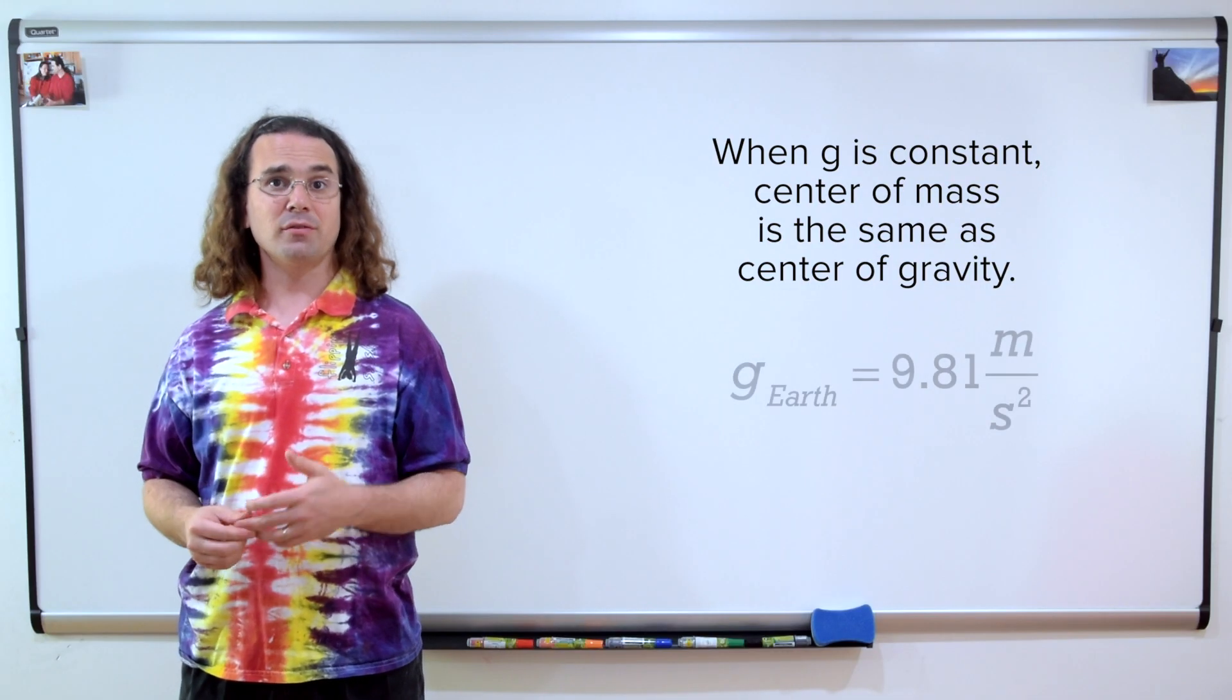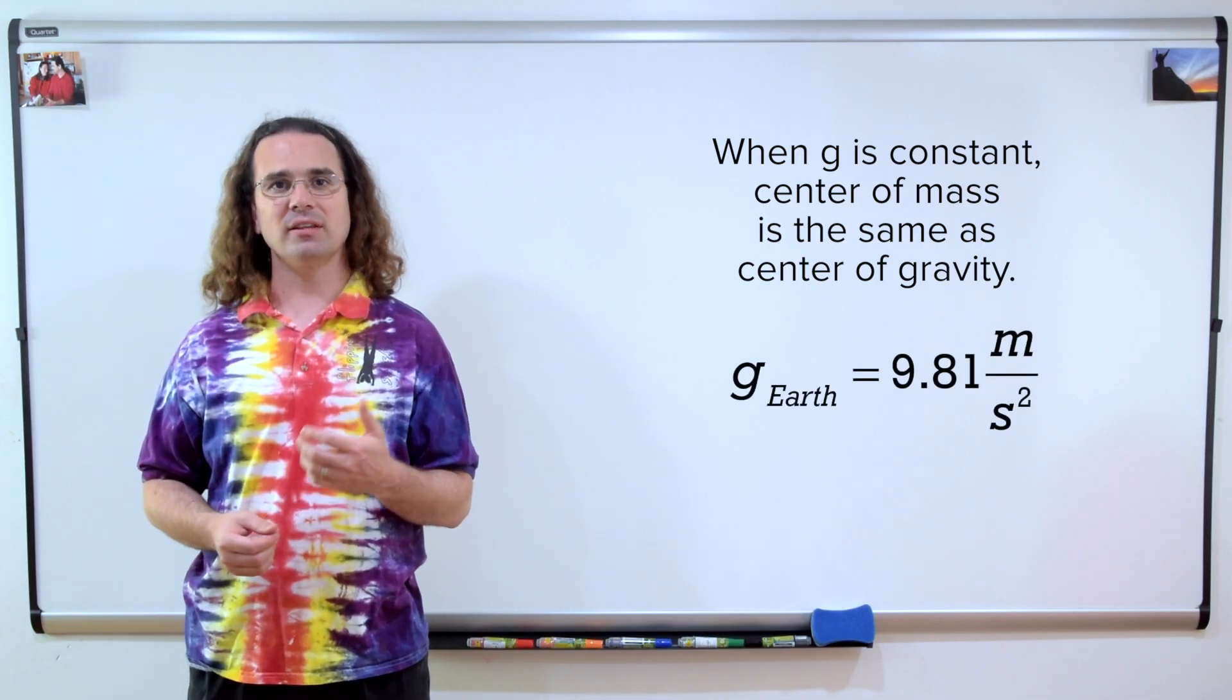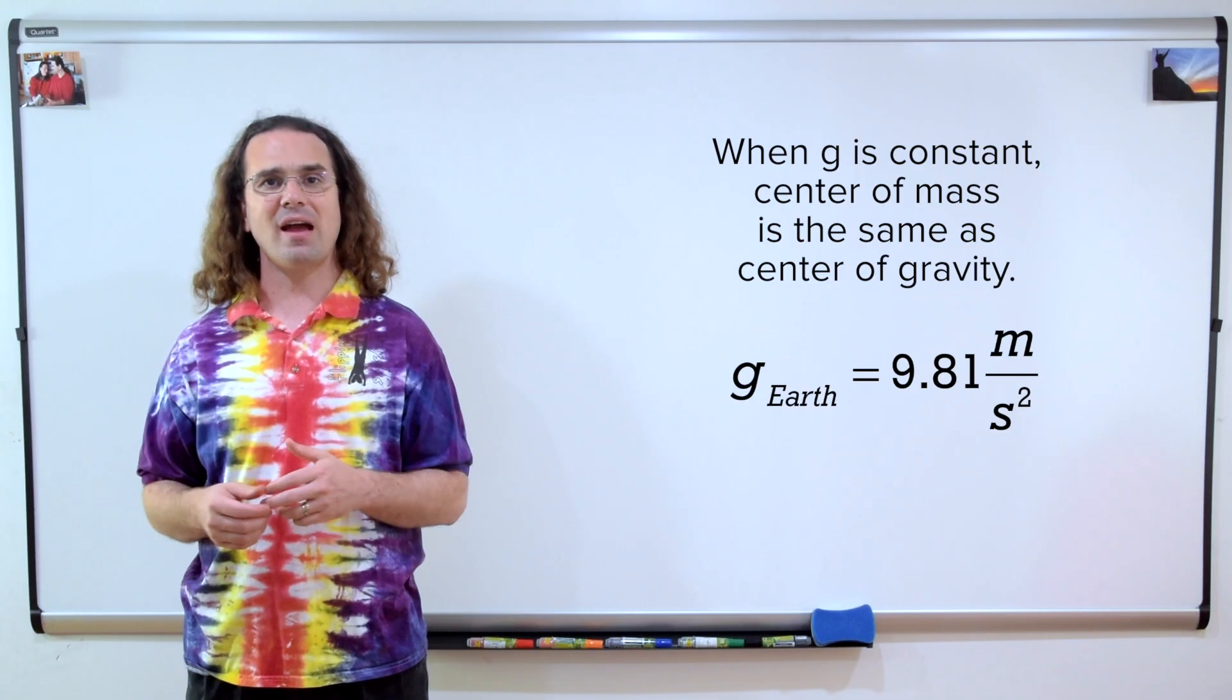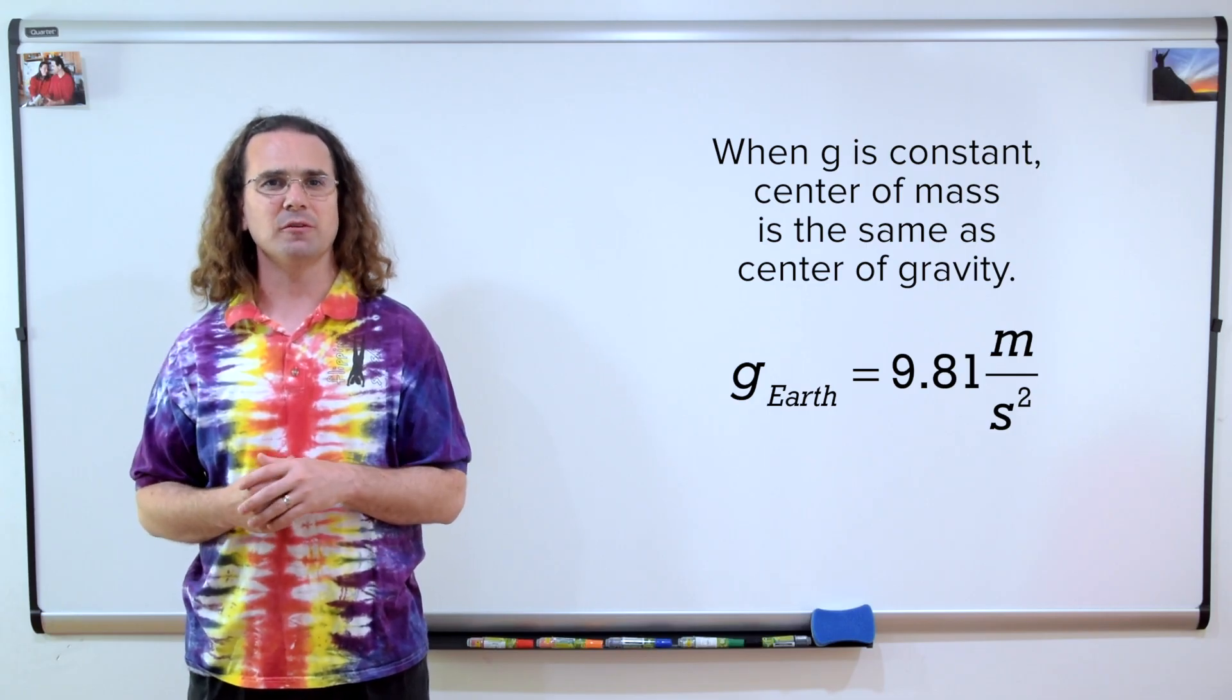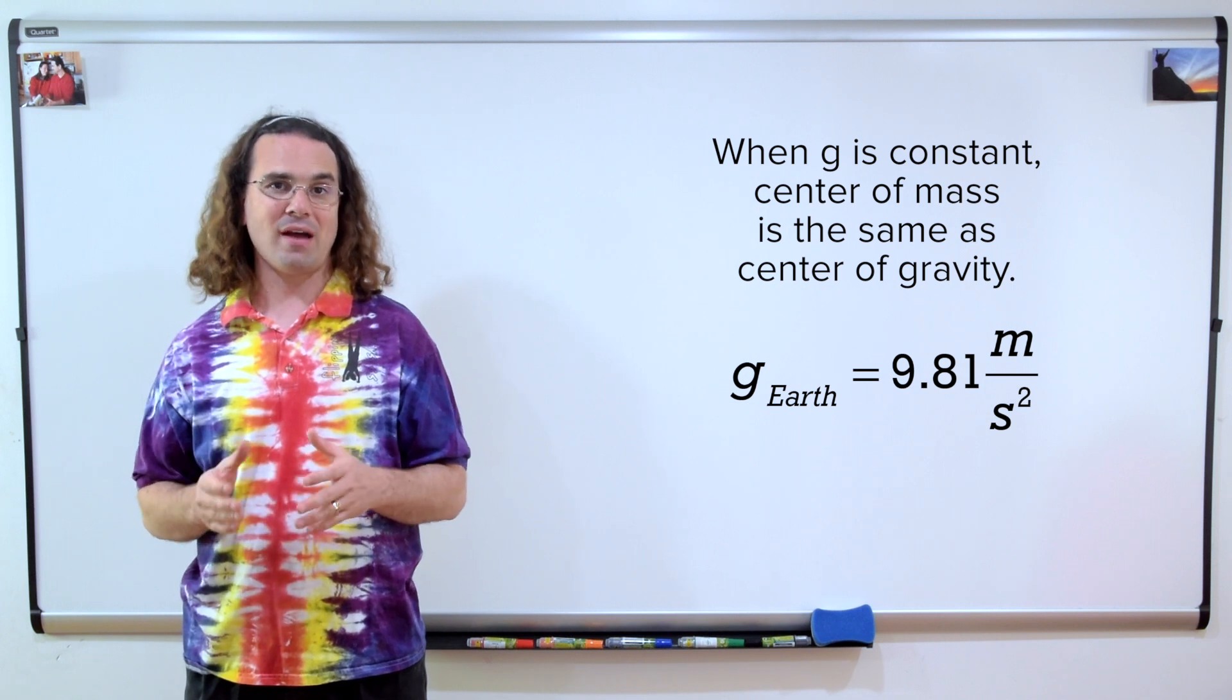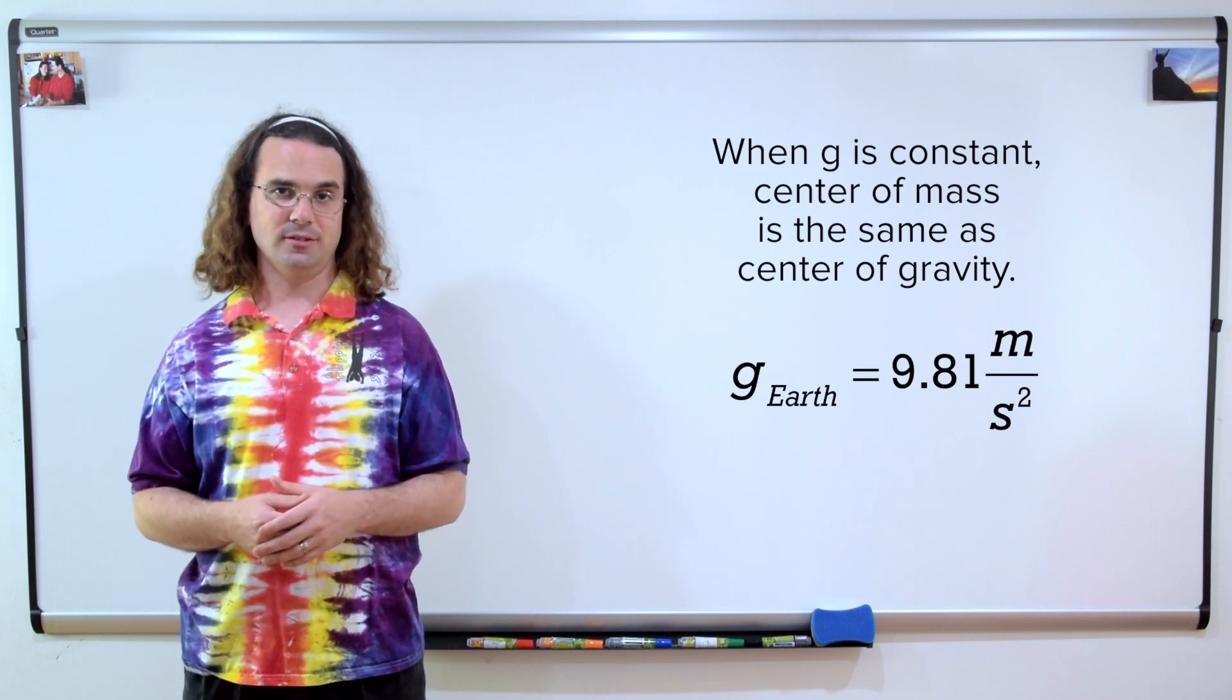Here on planet Earth, the acceleration due to gravity is nearly constant. Therefore, we generally consider center of mass and center of gravity to be in the same location. But it is worth noting that this is only true when the gravitational field is constant.